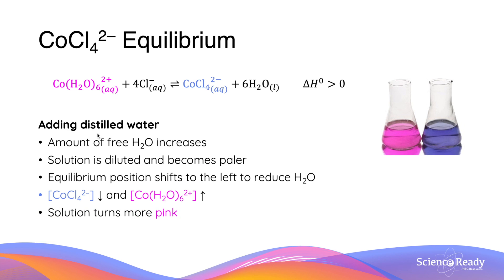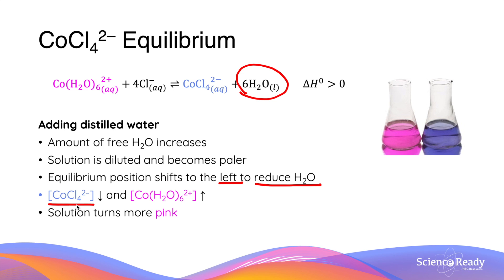Adding distilled water also affects the equilibrium position, as water is one of the products of this reversible reaction. Since the amount of free water molecules increases, the solution is diluted and becomes paler in appearance at the very beginning. Afterwards, the equilibrium position will shift to the left hand side in order to reduce the amount of water. This movement of equilibrium will reduce the concentration of dehydrated cobalt chloride and increase the concentration of hydrated cobalt ions, so the solution will turn more pink.